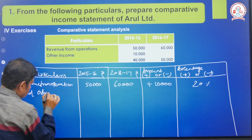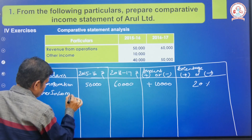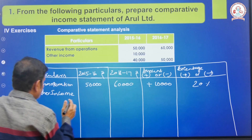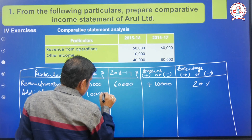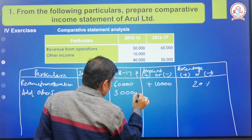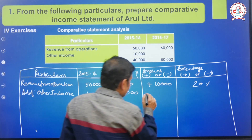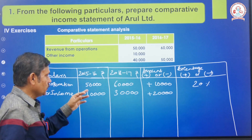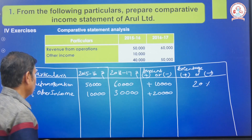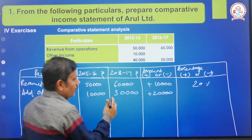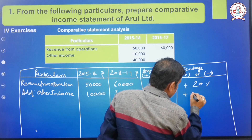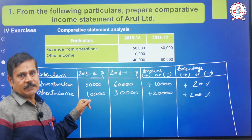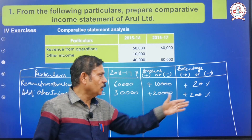Next is other income. First year is 10,000 and second year is 30,000. The difference is 20,000 increase. The percentage is 20,000 divided by 10,000 into 100, which gives 200 percent. The base is 10,000, which is 100 percent, so 20,000 is 200 percent.